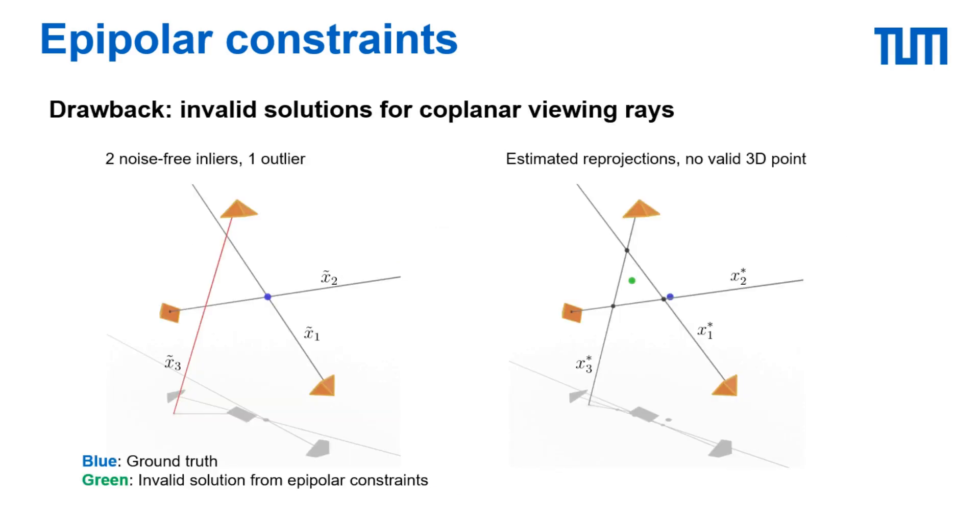While this approach works in many cases, one important issue is that points satisfying the epipolar constraints are not guaranteed to correspond to a single valid 3D point. In particular the epipolar constraints are also satisfied by any x_i which make all the viewing rays coplanar. As an illustration, in this example there are three views with two noise-free inliers and one outlier whose viewing ray is close to the plane spanned by the viewing rays of the two inliers. In this case the optimal solution is to wrongly classify the outlier as an inlier and select the x_i such that all viewing rays are coplanar but not intersecting in a single point.